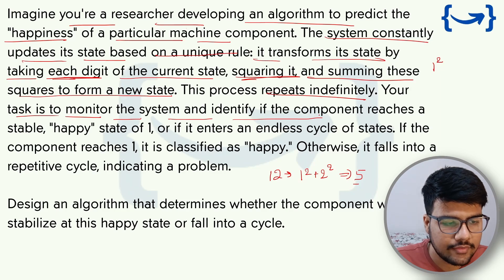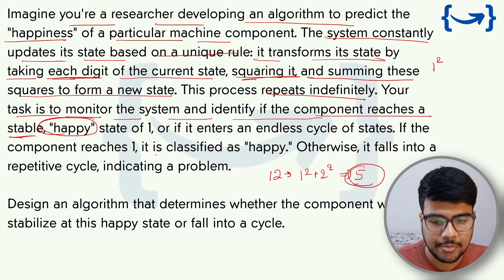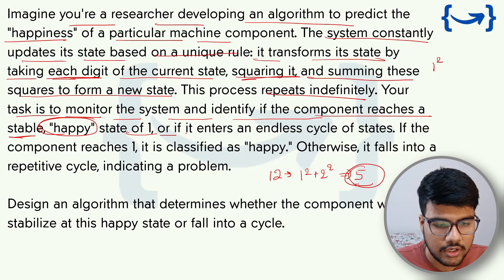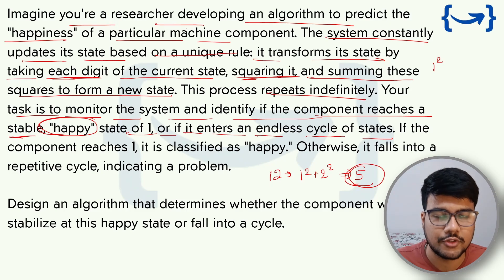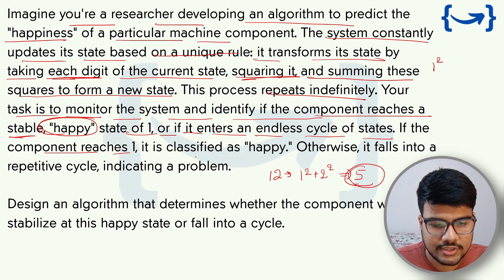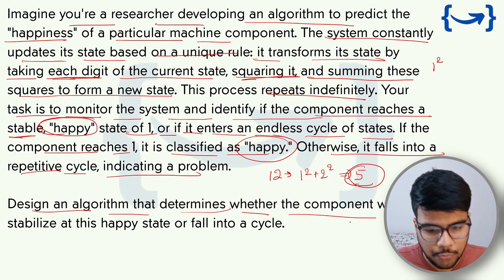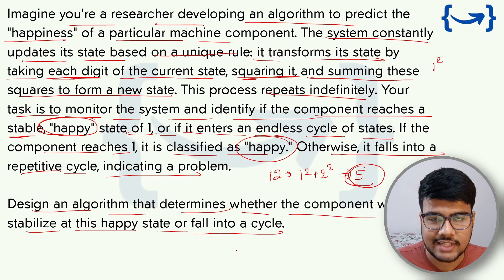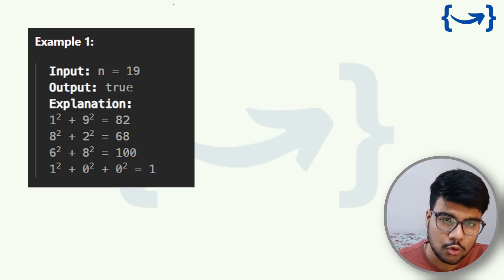This process repeats indefinitely. Your task is to monitor the system and identify if the component reaches a stable state, which is 'happy' — meaning the new state reaches 1. If it returns to an endless cycle of states, it is not happy. The component is satisfied and called 'happy' when it reaches 1; otherwise, it falls into a repetitive cycle indicating a problem. This is essentially the same as the Happy Number problem on LeetCode.